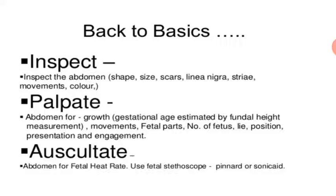Now back to basics of examination. First we need inspection, palpation, and auscultation. On inspection, we inspect the abdomen for size, shape, scars, linea nigra, striae, movement, and color. On palpation, we assess abdominal growth, gestational age estimation, fundal height measurement, fetal movement, fetal parts, number of fetuses, lie, position, presentation, and engagement. Then auscultation for fetal heart rate using a Pinard or Sonicaid.